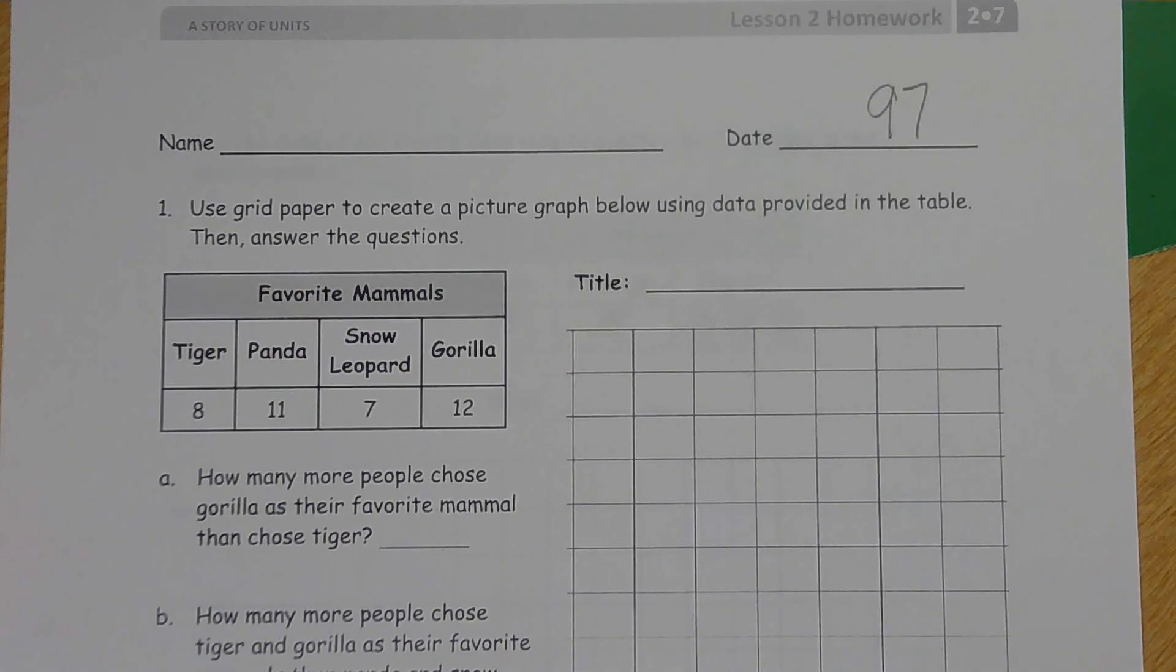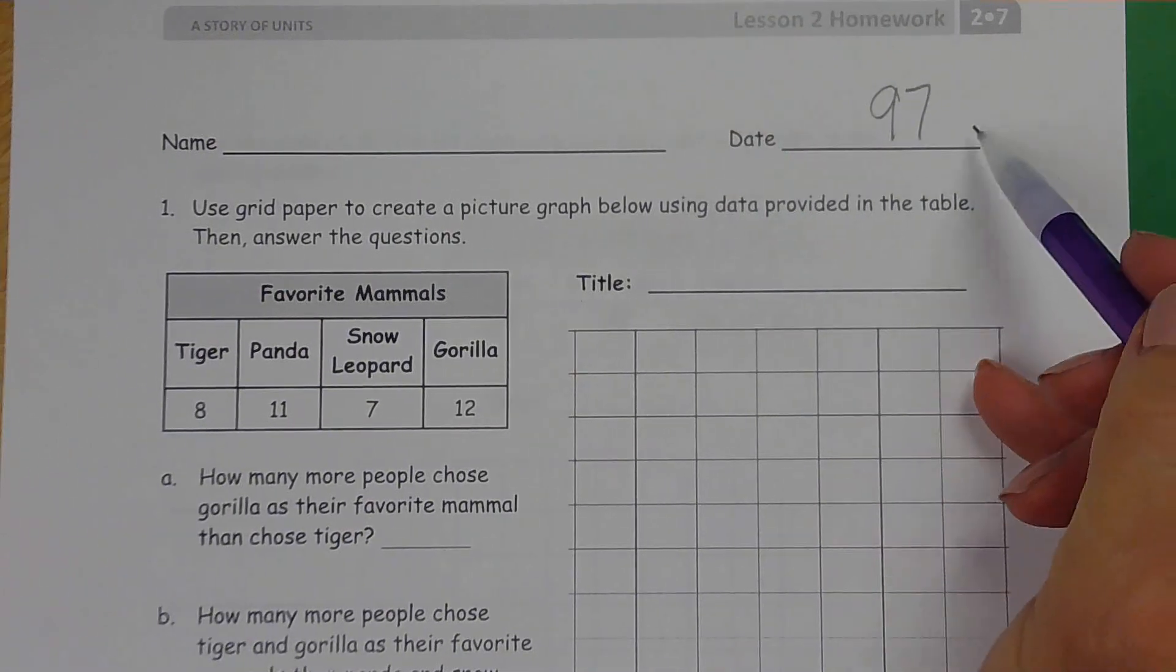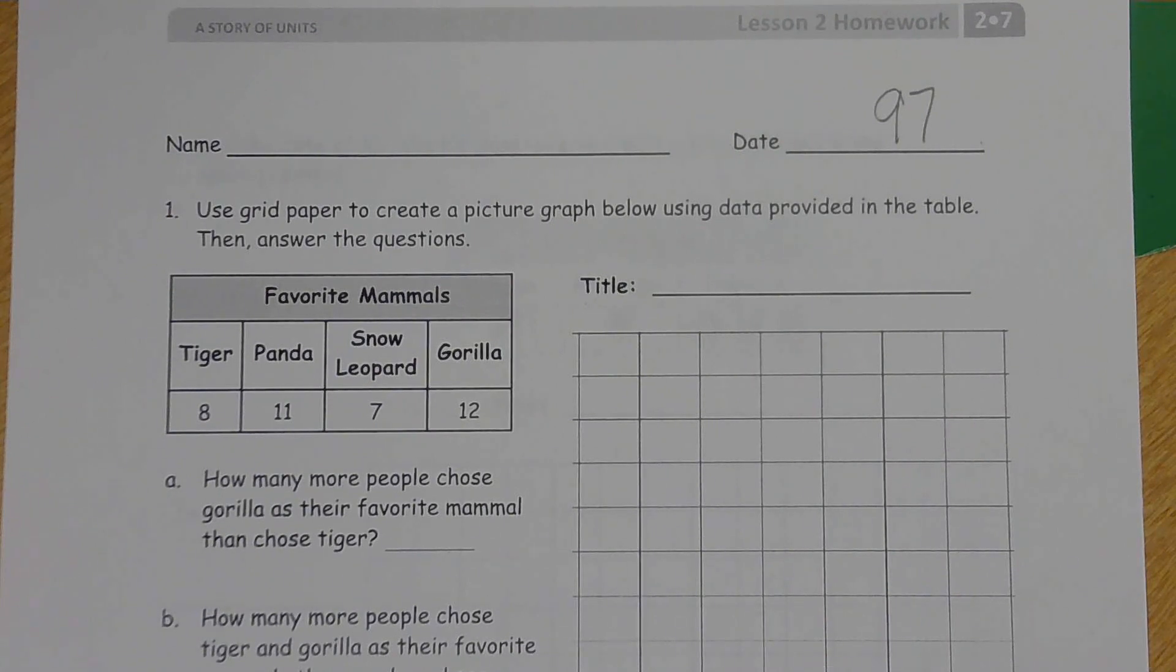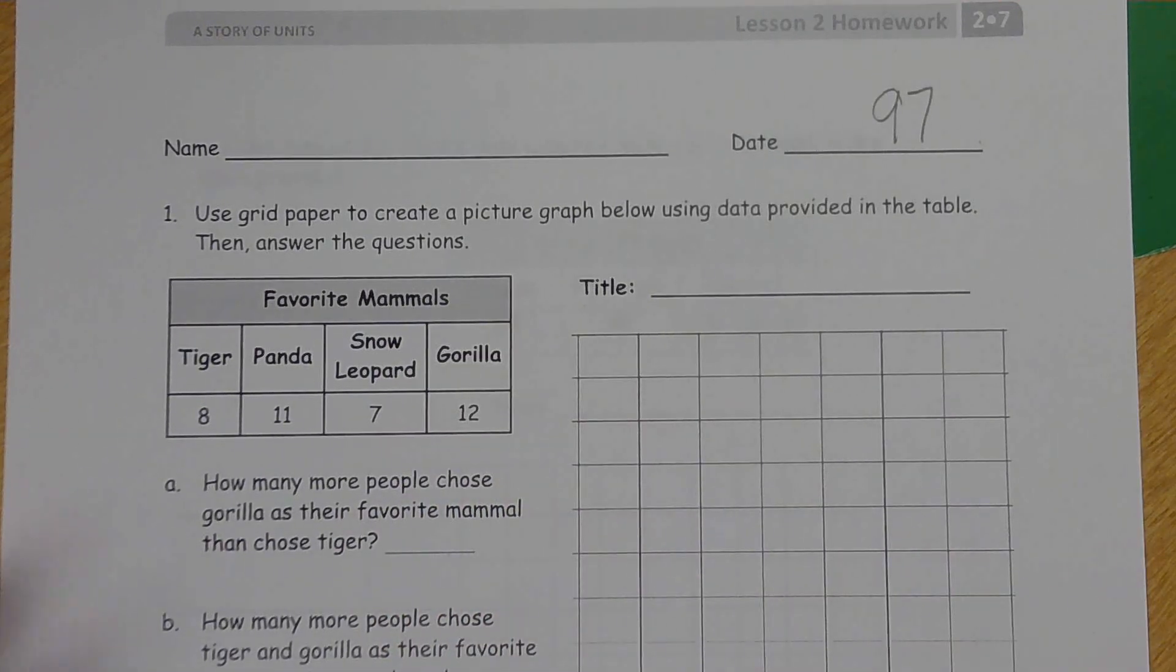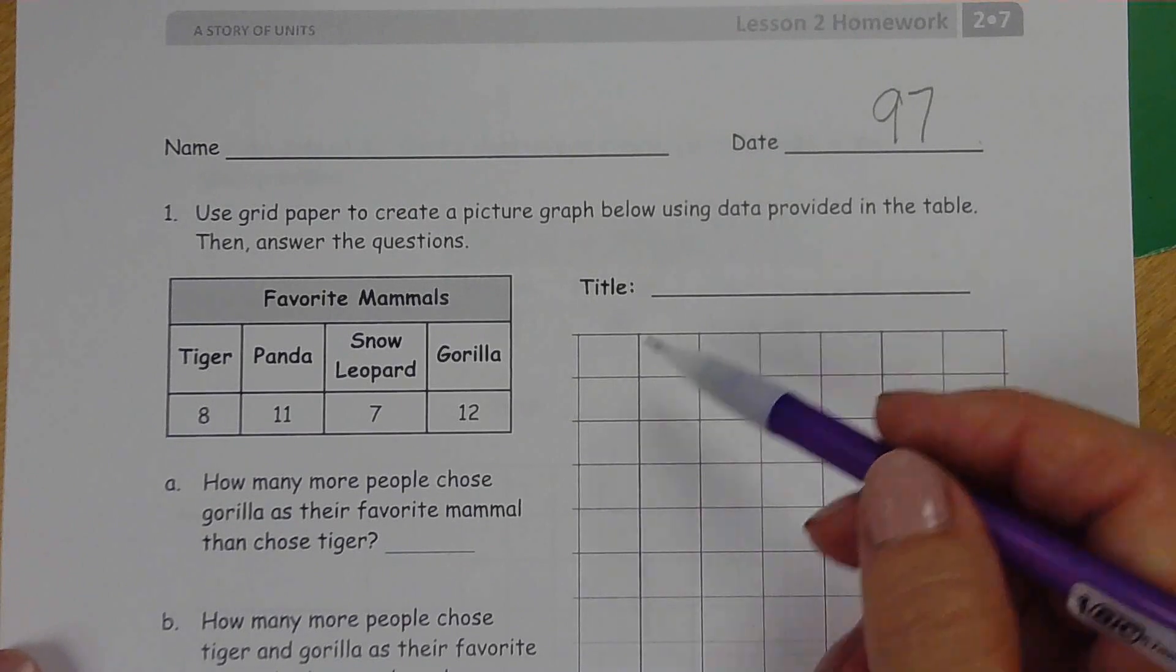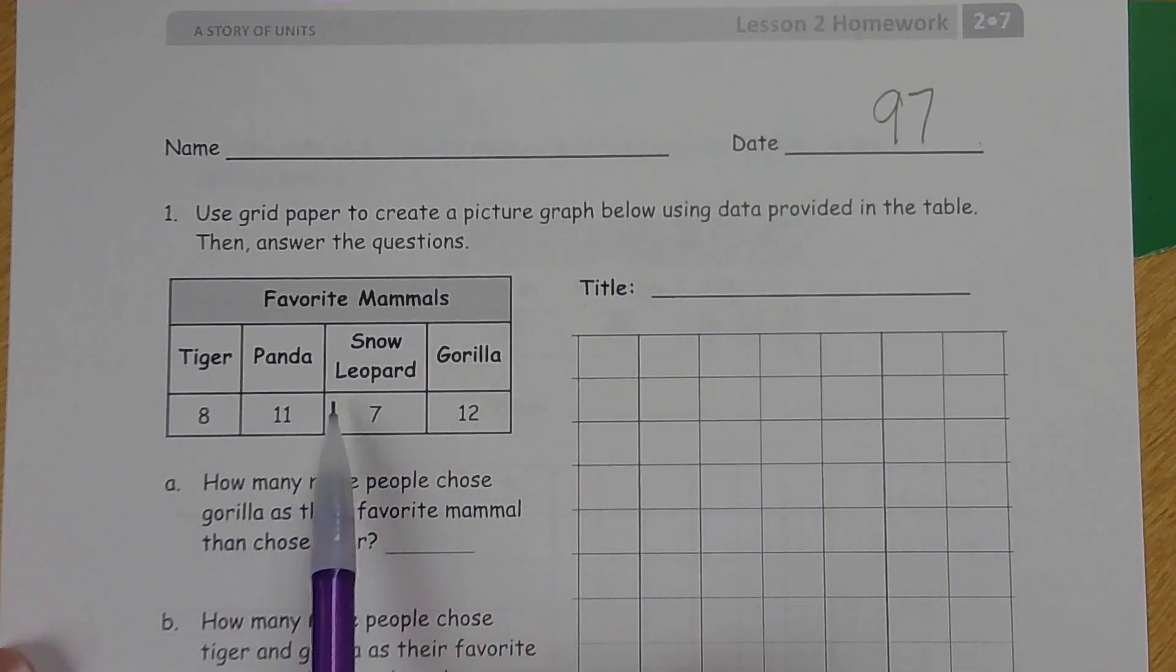Hi, everybody. We're back with Module 7, Lesson 2 Homework. This is on page 97 in your Succeed book. And we're continuing to work with data, little pieces of information, tables and charts.